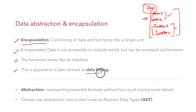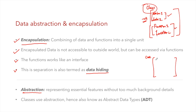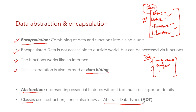This separation provides security, hence the term data hiding — we are hiding data from the outside world. Abstraction is representing essential features without too much background detail. For example, a class Car would have attributes like number of wheels and type of car, without adding unnecessary background details. Classes use abstraction, hence classes are also known as Abstract Data Types, or ADT.